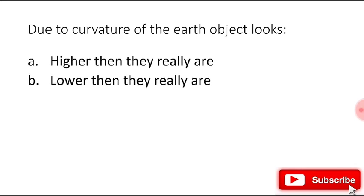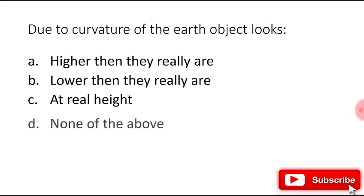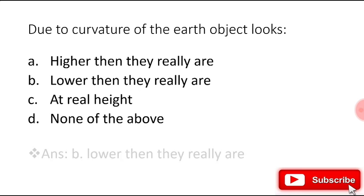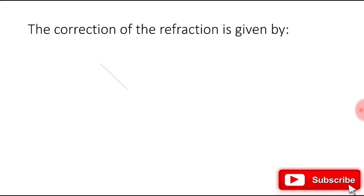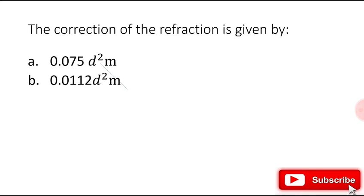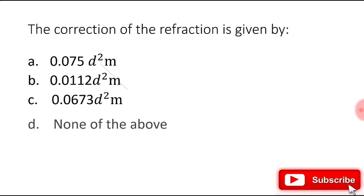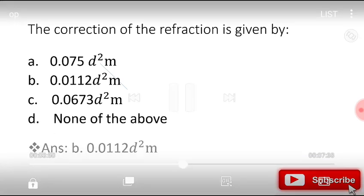Due to curvature of the earth, objects look: higher than they really are, lower than they really are, at the real height, or none of the above? The right answer is lower than they really are. The correction for refraction is given by: 0.075 D², 0.112 D², 0.0673 D², or none of the above? The right answer is 0.0112 D² meters, where D is the distance measured in kilometers.